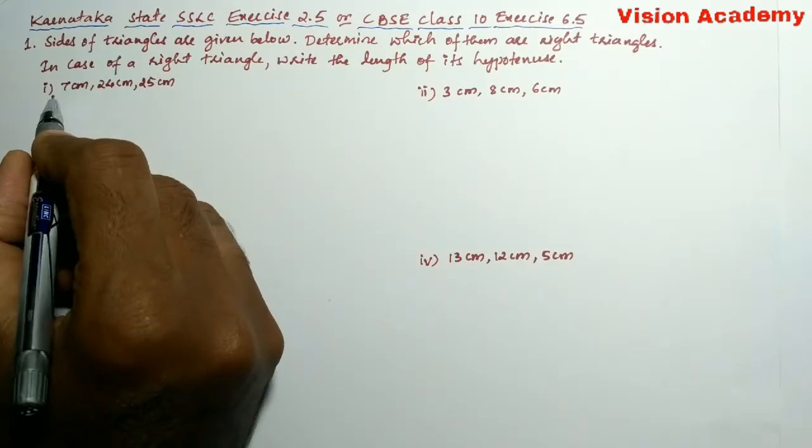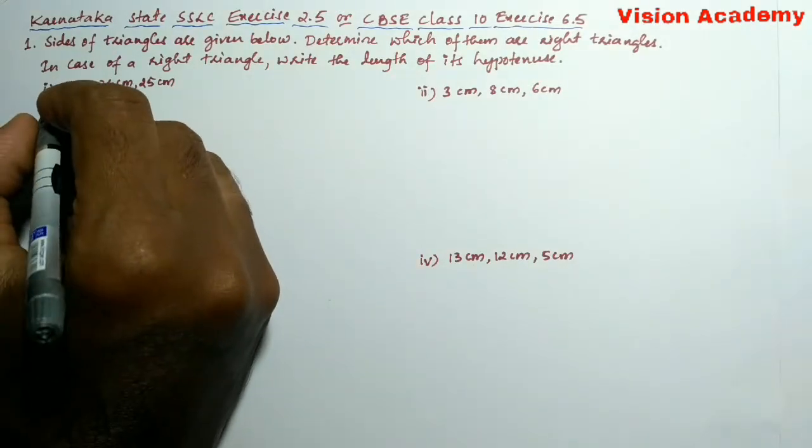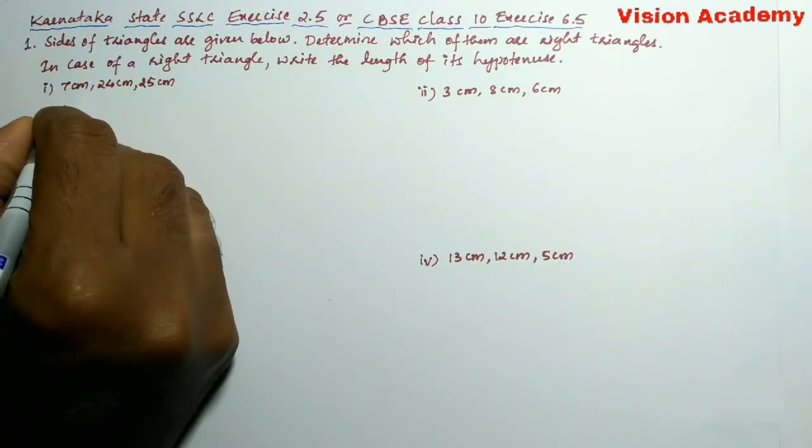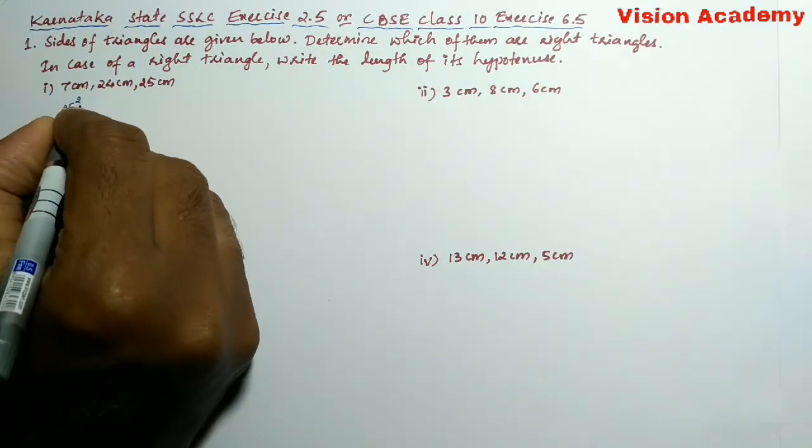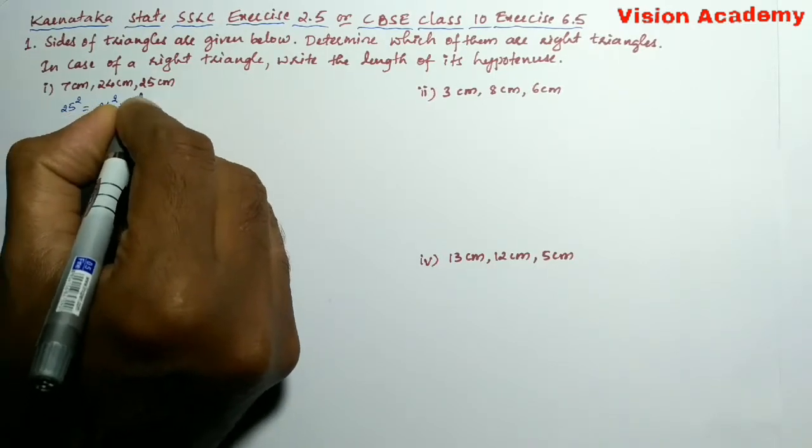Here question number 1: 7 centimeter, 24 centimeter, and 25 centimeter. So let us write 25² = 24² + 7².